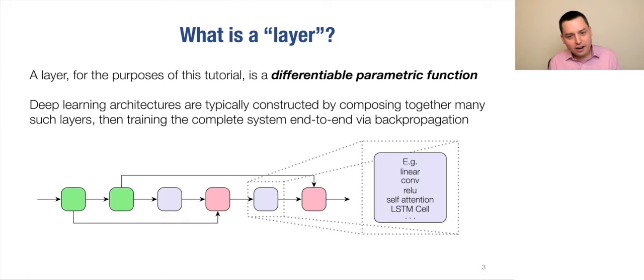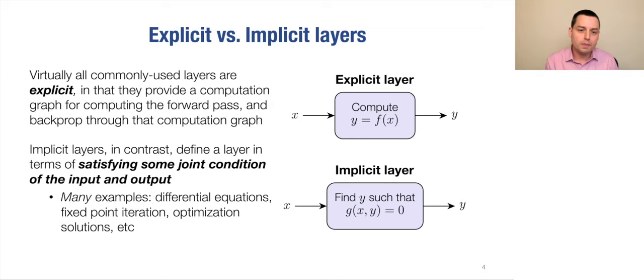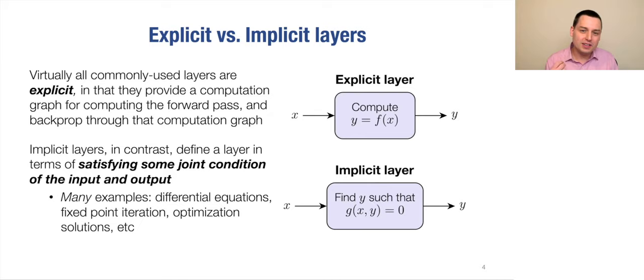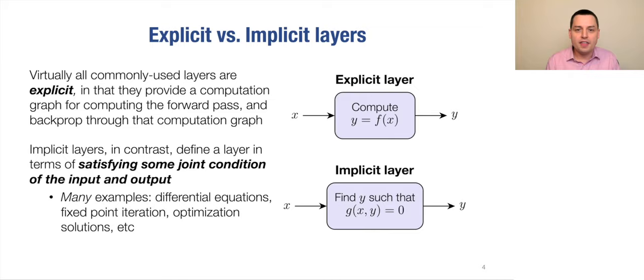However, there actually are different types of layers, and there's a distinction we're going to make a lot in this tutorial — between explicit and implicit layers. Almost all the layers you typically use in deep learning are what are called explicit layers: they provide a concrete computation graph for how we compute the output from the input. But there's actually a very different kind of layer — implicit layers — where instead of specifying a computation graph, they define some condition that the output and input should jointly satisfy, such as a nonlinear equation. Examples include differential equations, fixed point iteration, and optimization.